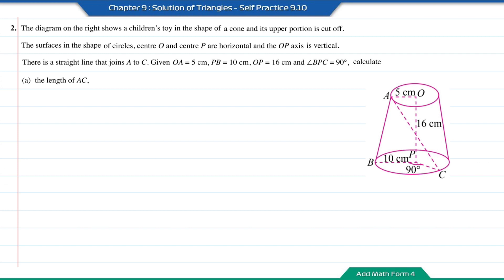Question number 2. The diagram on the right shows a children's toy in the shape of a cone with its upper portion cut off. The surfaces in the shape of circles, center O and center P, are horizontal and the OP axis is vertical. There is a straight line that joins A to C. Given OA equals 5 cm, PB equals 10 cm, OP equals 16 cm, and angle PBC equals 90 degrees. Calculate (a) the length of AC. Here you need to use a little bit of imagination as the shape given is 3D. The length PC is the radius of the bottom circle, therefore PC is also equal to 10 cm.